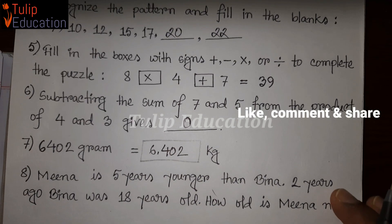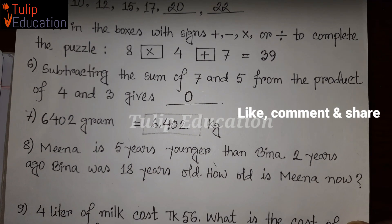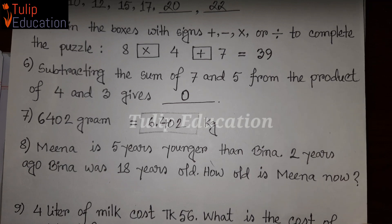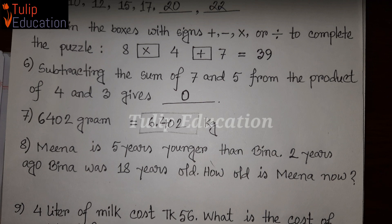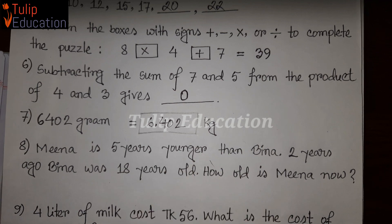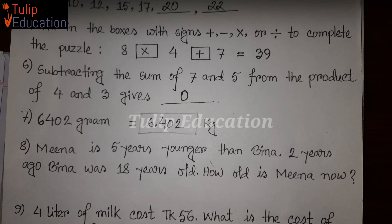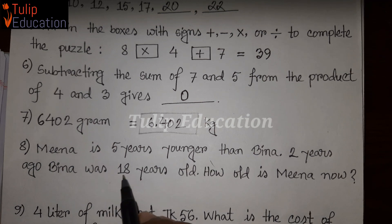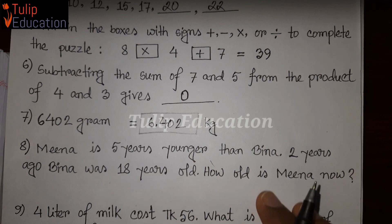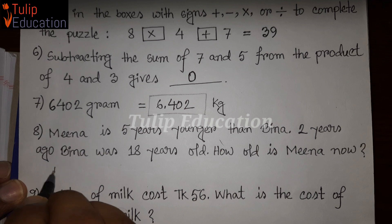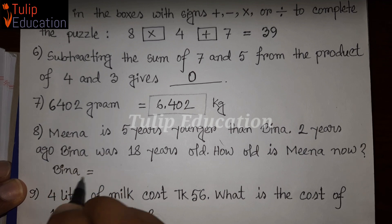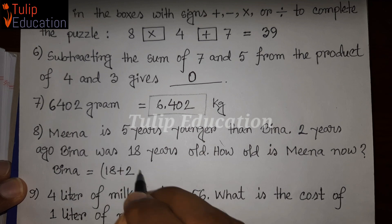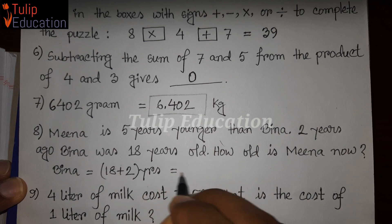Question number 8: Meena is 5 years younger than Meena. 2 years ago, Meena was 18 years old. How old is Meena now? So Meena is 5 years younger. 2 years ago Meena was 18 years old. So 18 plus 2 years equals 20 years old now.